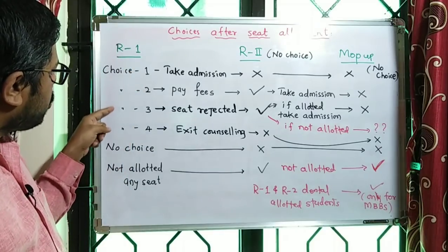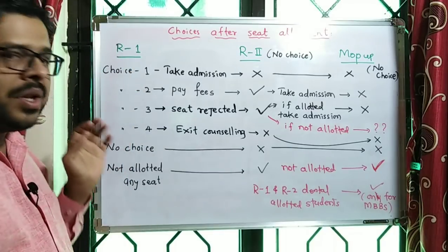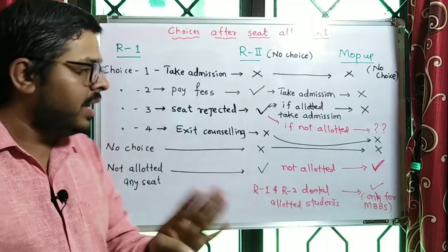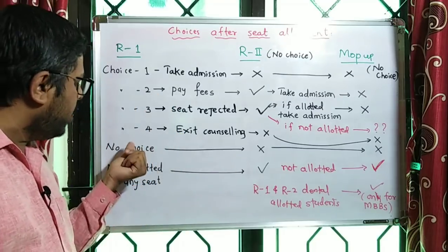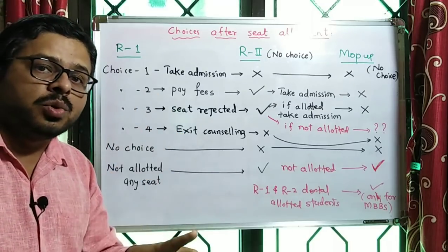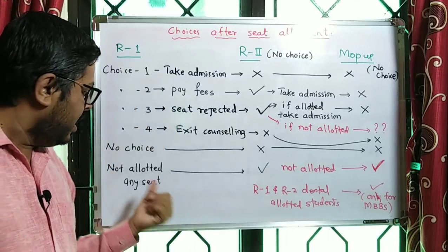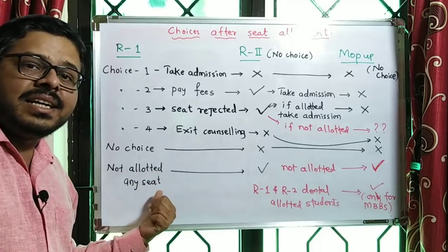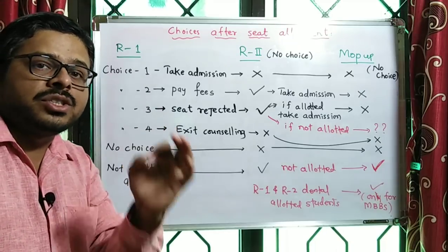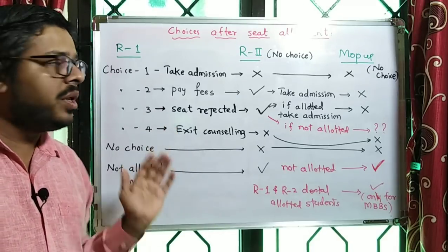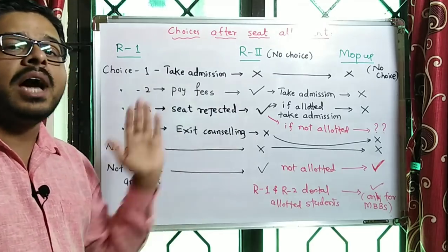You can change the order of the choice — choice one, choice two, choice three, choice four. There are four types of choices. That's why there are different categories of students. Students not allotted any seat are also a category. In the second round, who are eligible?